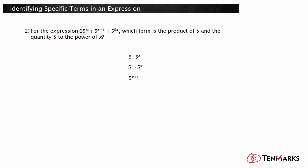We see that this is the second term in the expression. So, the term 5 raised to the quantity x plus 1 represents the product of 5 and the quantity 5 to the power of x.